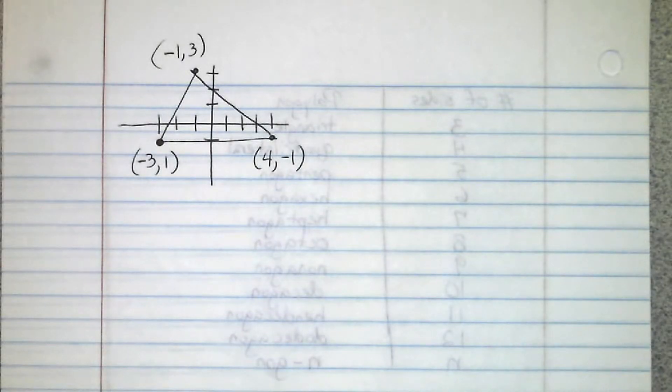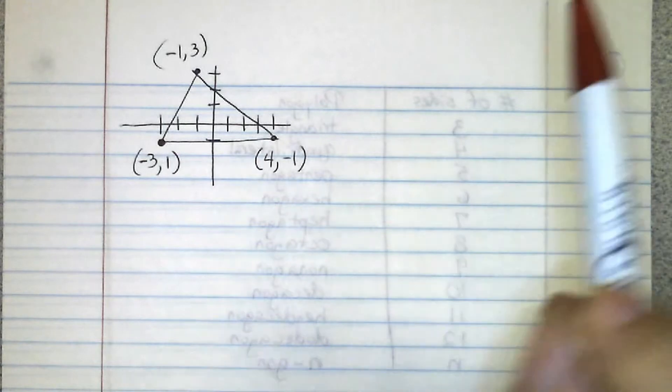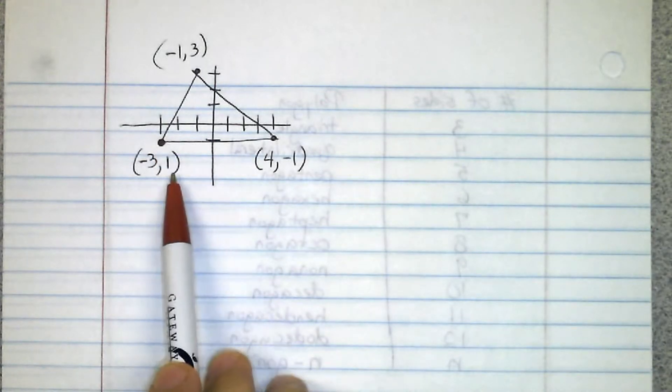Suppose that we had this triangle and we were asked to find the perimeter of it, and there's no distances written down. Well, right here since both of these have a y-value of negative one, that means this is a straight line right here.